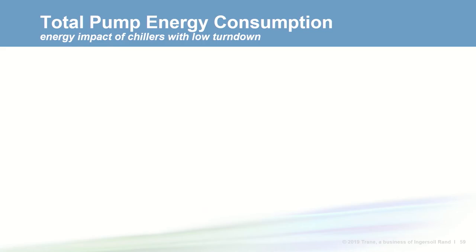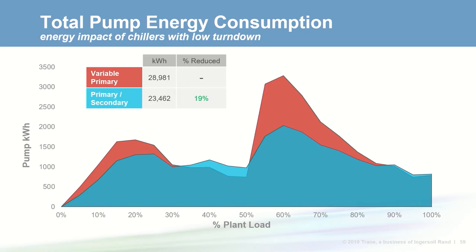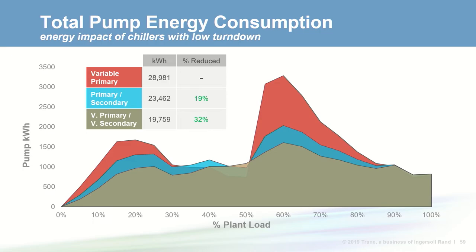We analyzed a load profile from Pacific Northwest National Labs for an office building in St. Louis to develop an annual pump KWH comparison. The variable primary flow system consumed almost 29,000 KWH. Primary secondary consumed 19% less pump energy over the course of the year. The variable primary variable secondary configuration consumed the least at about 20,000 KWH — 32% less pump energy than the variable primary flow configuration.